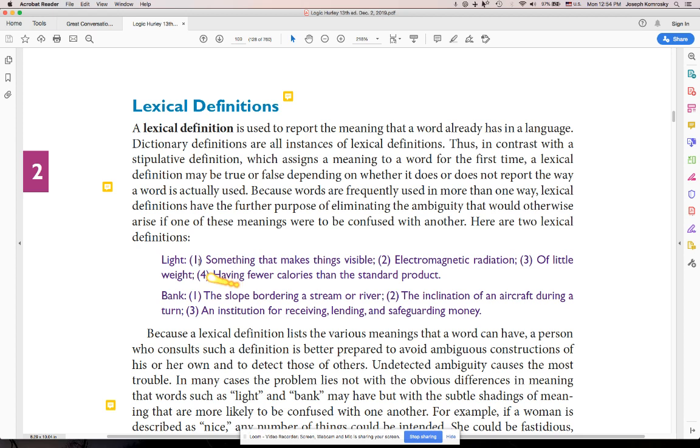You can see it a few different ways. Notice down here with light, you see one, two, three, four. That's four different ways you can define light. So when somebody uses the word light in a sentence or in a debate or an argument, you might run into ambiguity and say, what do you mean by light? I can think of at least a few different ways. And then they go, I mean this way.